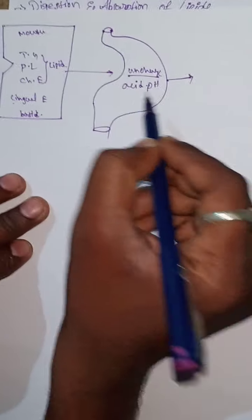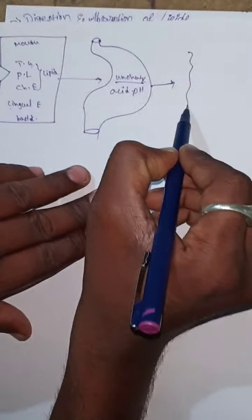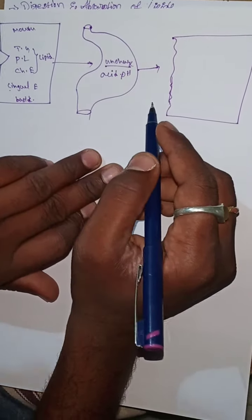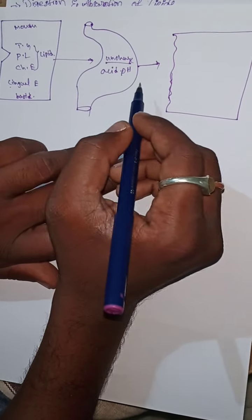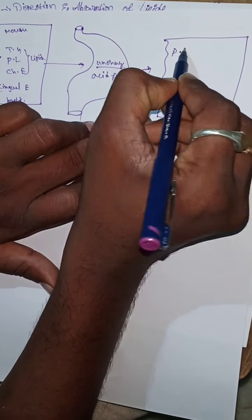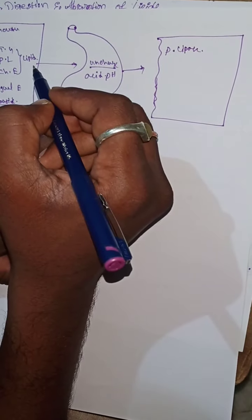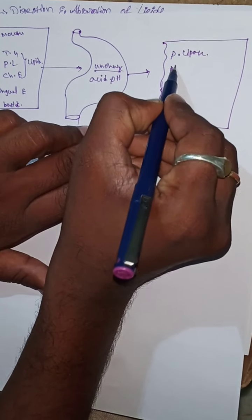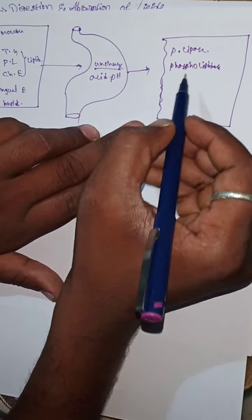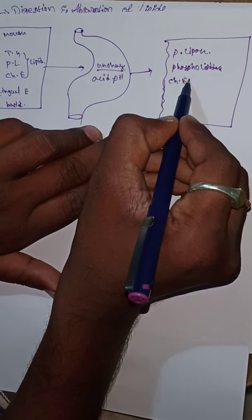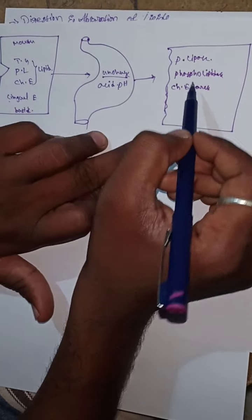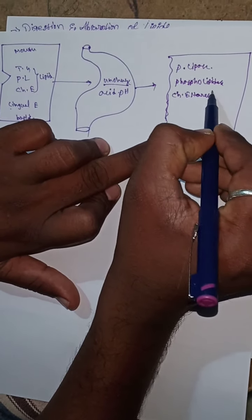From the stomach, the compounds enter the intestine. In the intestine, pancreatic enzymes are involved: pancreatic lipase enzyme, phospholipidase enzyme, and cholesterol esterase enzyme. The lingual enzyme also participates at the stomach stage.